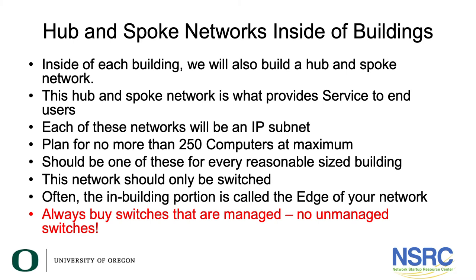Hub-and-spoke inside buildings: where fiber enters the building is the service entrance. From that service entrance we run up to each individual network rack. Each building will be at least one IP subnet, and we plan for no more than 250 computers per building. If a building has more than 250 computers, we recommend segmenting into multiple subnets — for example, computer labs on a separate IP subnet from the rest of the building. Inside a building the network should only be switched, with VLANs and separate subnets routed at the core. This in-building portion is called the edge of your network.